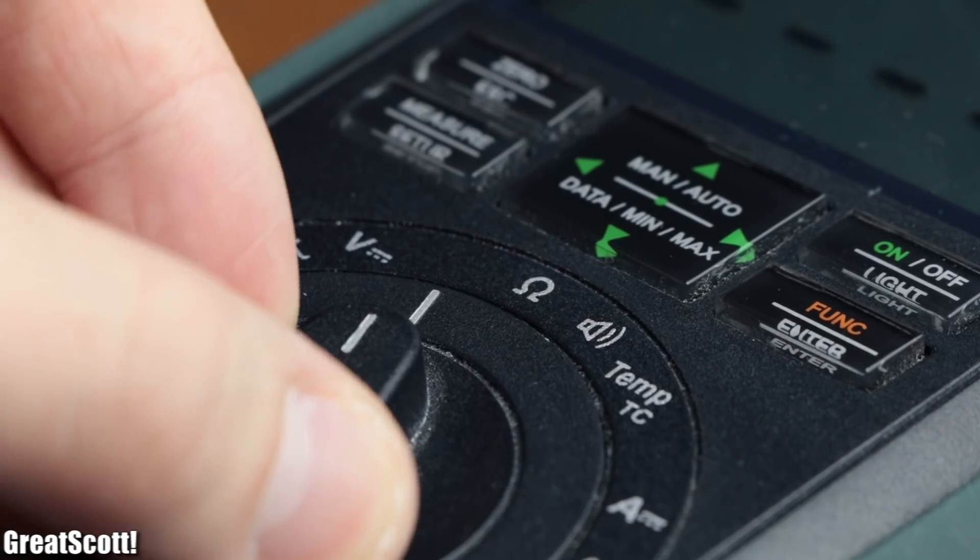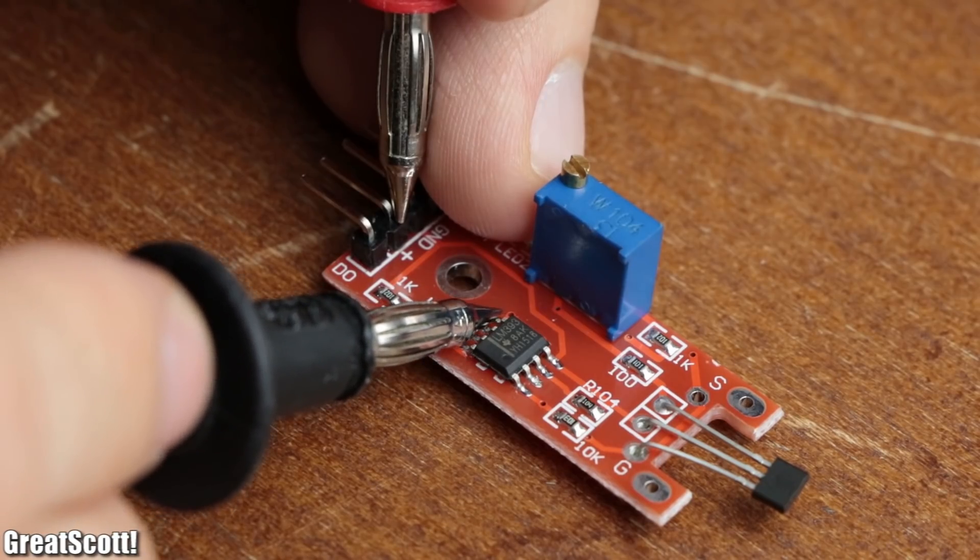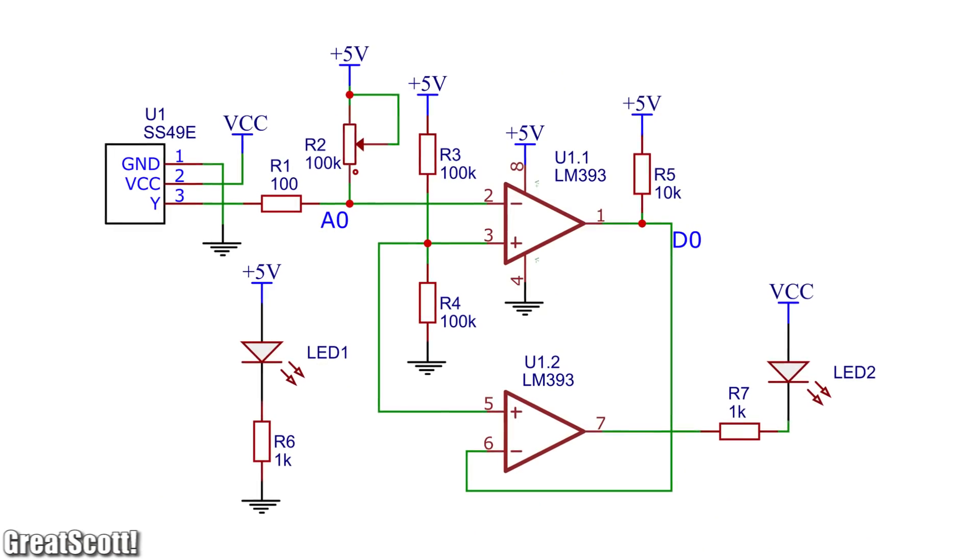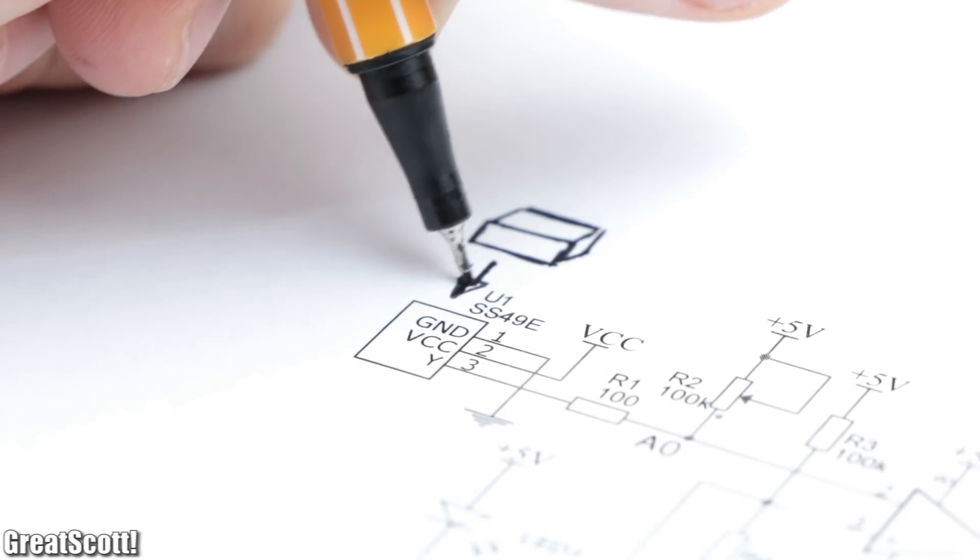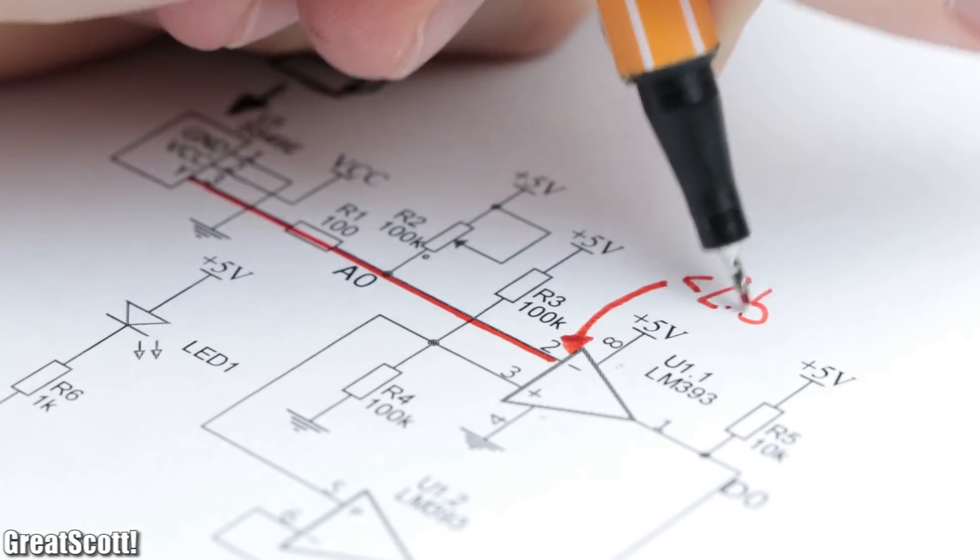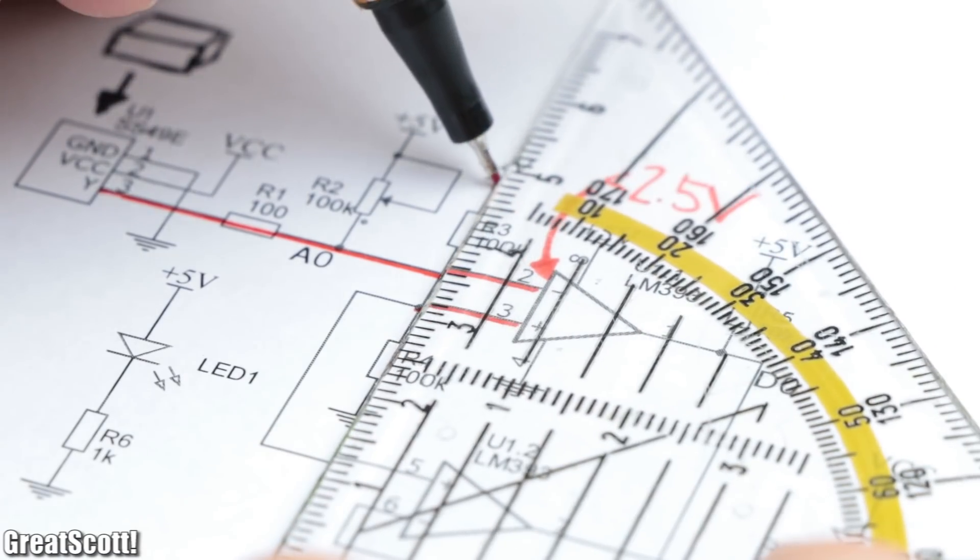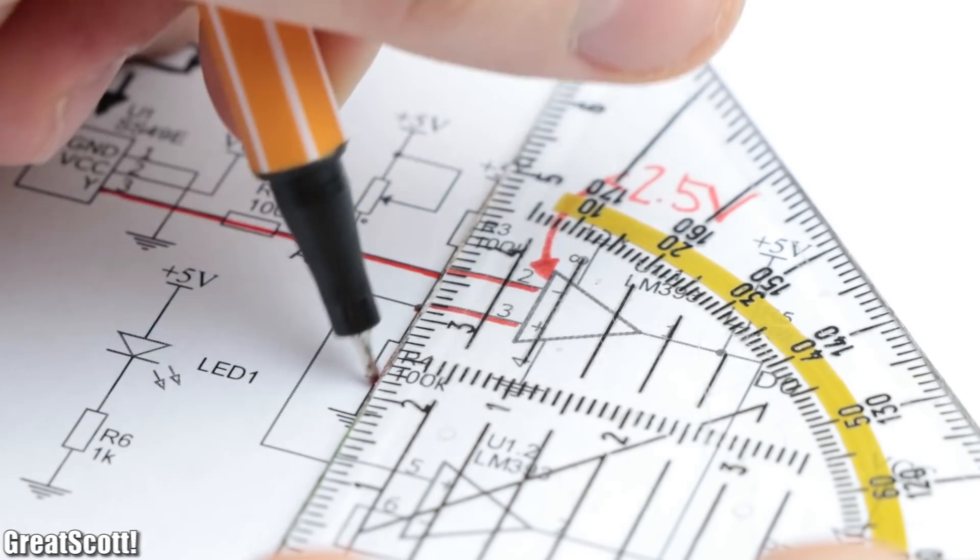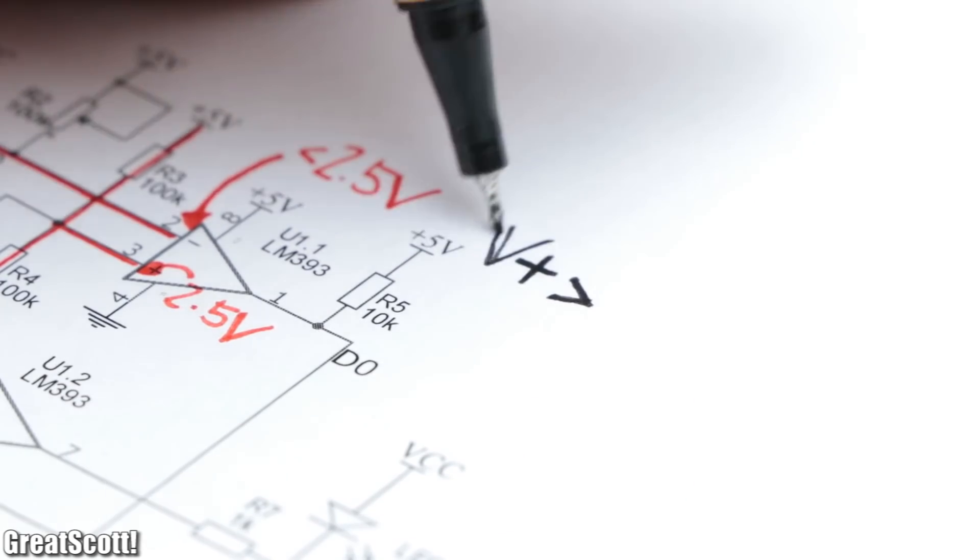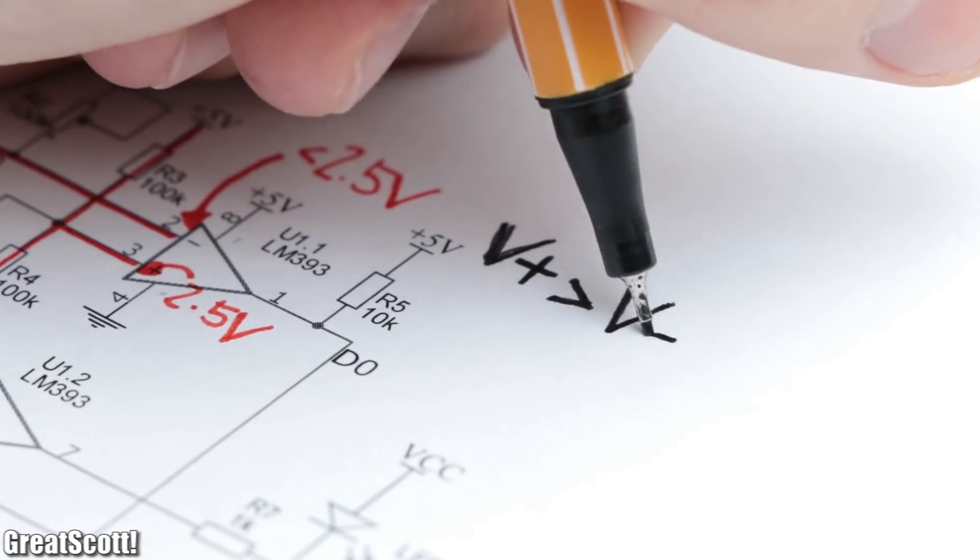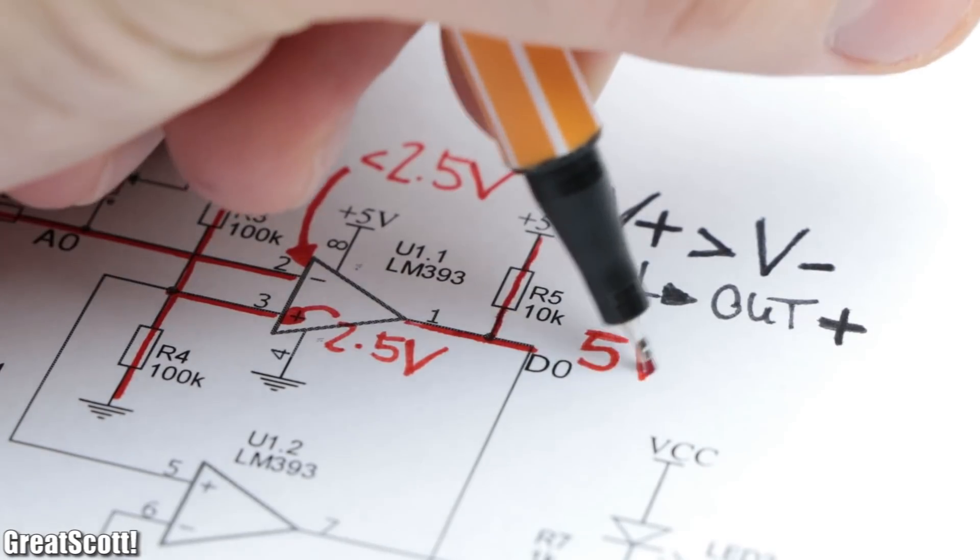By using the continuity function of my multimeter and thus reverse engineering the circuit, I came up with this basic schematic. Now when the permanent magnet gets too close to the Hall effect sensor, its voltage value falls underneath 2.5 volts. Since the non-inverting input of the comparator is connected to a voltage divider which creates 2.5 volts, this input has a higher voltage than the inverting input and thus the output gets pulled high at 5 volts through the pull-up resistor.